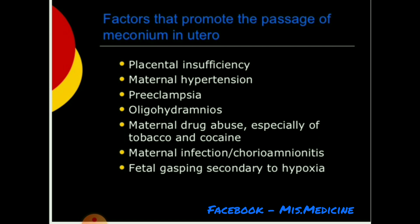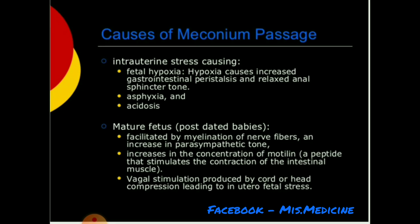Factors that promote passage of meconium in utero include: placental insufficiency, maternal hypertension, preeclampsia, oligohydramnios, maternal drug abuse especially tobacco and cocaine, maternal infection or chorioamnionitis, and fetal gasping secondary to hypoxia.